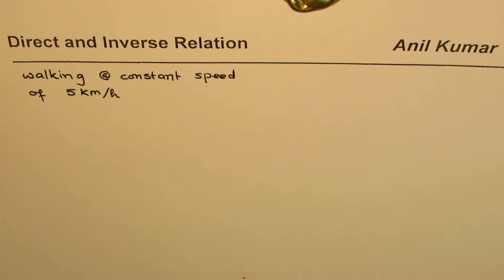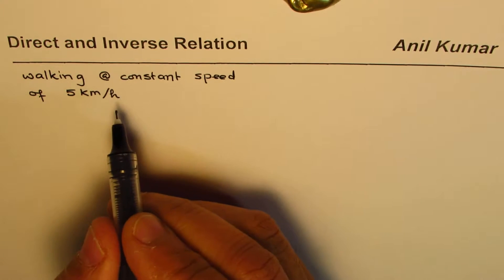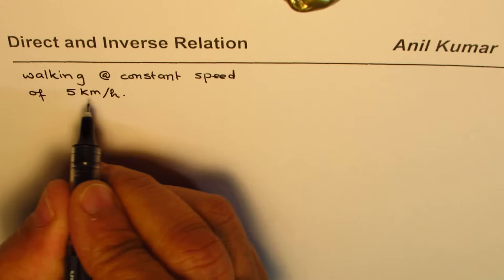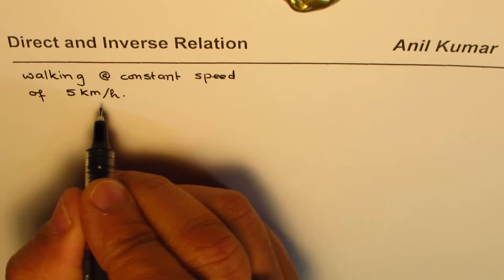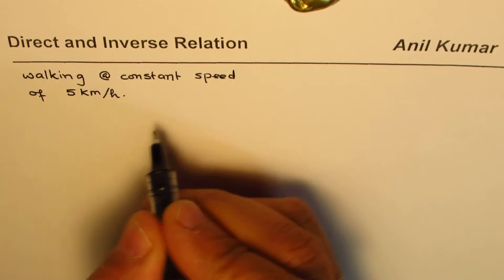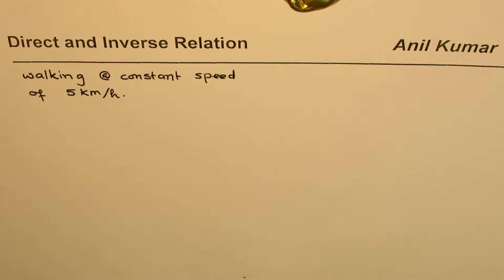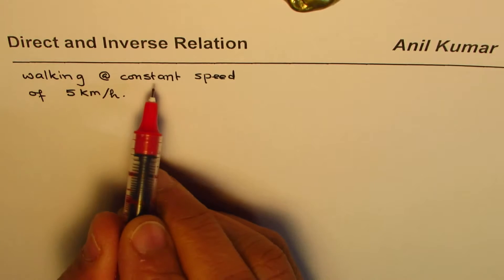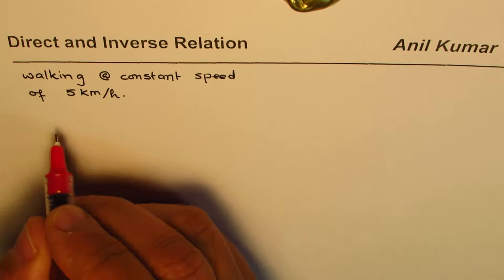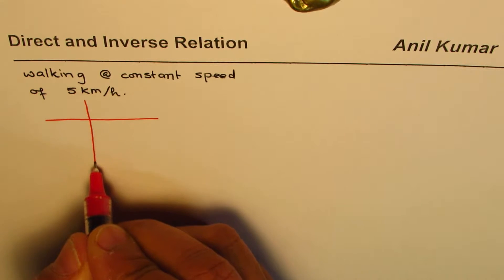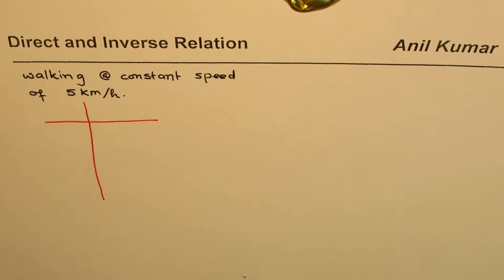Walking at a constant speed of 5 kilometers per hour, with time I have to find the distance traveled. With this constant speed, as the time passes, the distance will increase. So every hour, 5 more kilometers can be covered. If I continue to walk at a constant speed of 5 kilometers per hour, what happens to distance with time? Let's look at it in the form of a table.